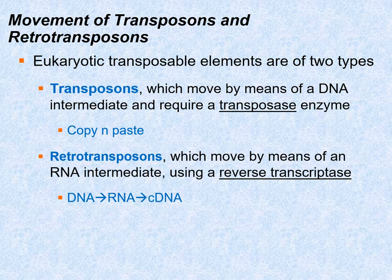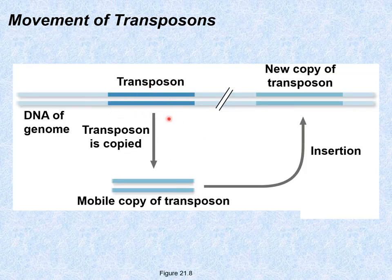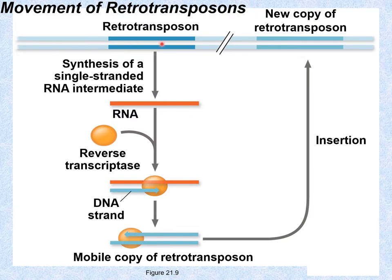Using the transposase enzyme is like a copy-and-paste mechanism, while retrotransposons use a DNA→RNA→cDNA process via reverse transcriptase. The transposon is copied into DNA and inserted in another location, resulting in two transposons. For retrotransposons, the sequence is converted to RNA, then reverse transcriptase copies a DNA strand complementary to that RNA using base pairing rules, creating a double-stranded DNA copy that is then inserted elsewhere — so now there are two copies of the retrotransposon.